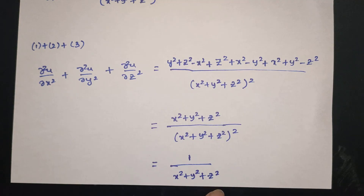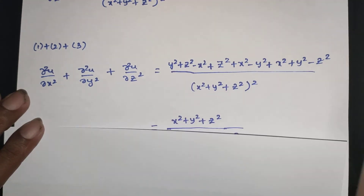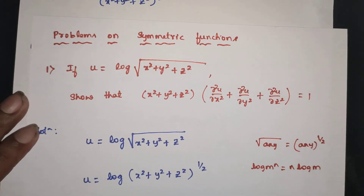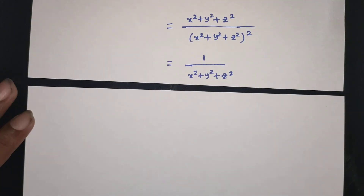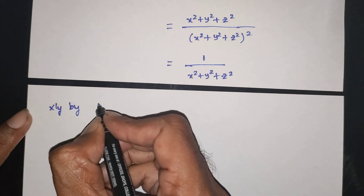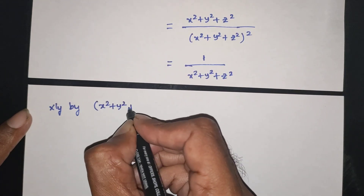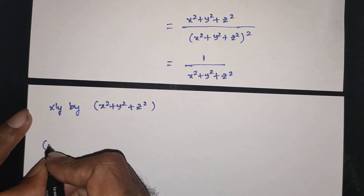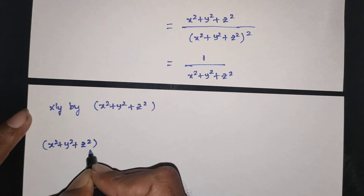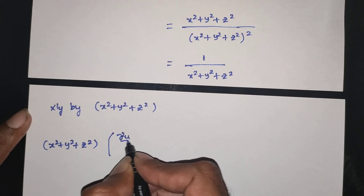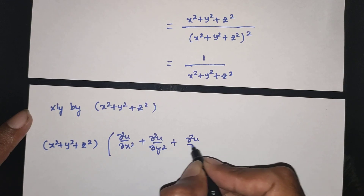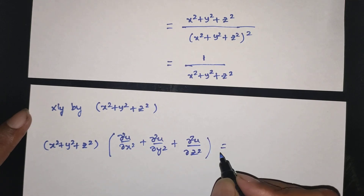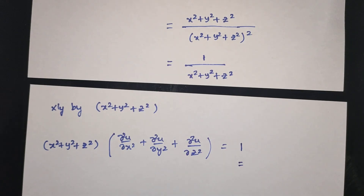Now multiplying by (x² + y² + z²): (x² + y² + z²) × (1/(x² + y² + z²)) = 1. Hence x² + y² + z² into (∂²u/∂x² + ∂²u/∂y² + ∂²u/∂z²) is equal to 1. Thank you. Please like, share, and subscribe.